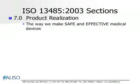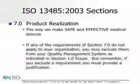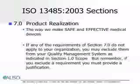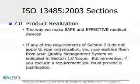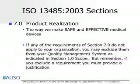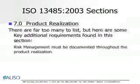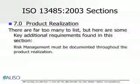If any of the requirements of section 7.0 do not apply to your organization, you may exclude them from your quality management system as indicated in section 1.0 of the scope. But remember, if you exclude a requirement, you must provide a justification. There are far too many additional requirements to list, but here are a few that you can find in this section.